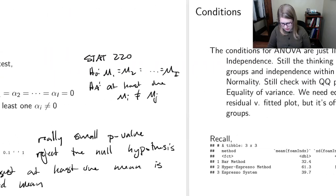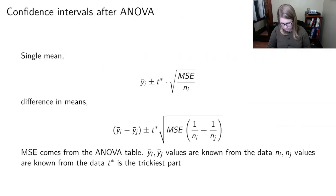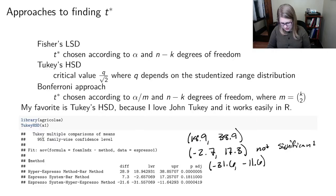When we started talking about inference after ANOVA and these different approaches to finding the T star, some of that is in chapter 5, but there's a little bit in section 8.2. I think that's where Tukey's HSD gets brought in.